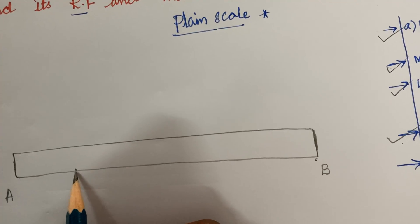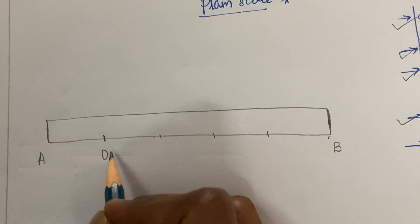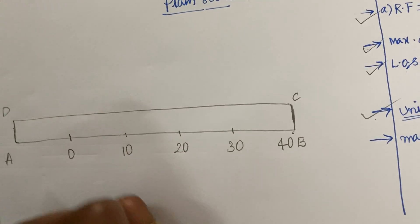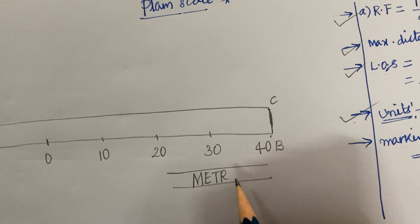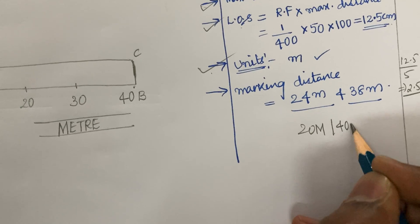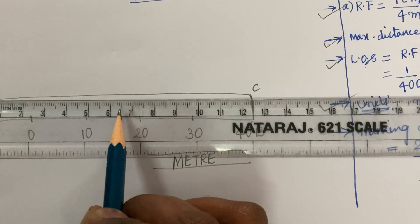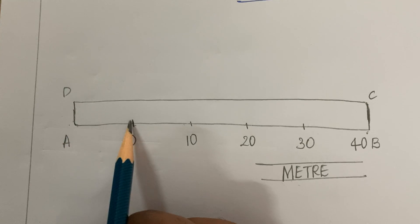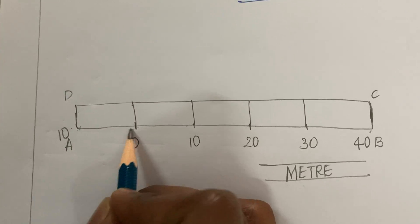Take your scale and mark 2.5 cm divisions: 1, 2, 3, 4, and 5. The first division is marked as 0, then 10 meters, 20 meters, 30 meters, 40 meters, and CD is 40 meters — this is the main meter scale. Since the marking distances are 24 meters and 38 meters, not just round values, I need a secondary subdivision. I take 10 units to the left of zero, which is the secondary scale or subdivision, and divide the 0-to-10 section to the left.